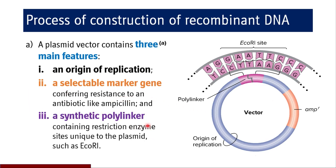Then there is a synthetic polylinker which contains restriction enzyme sites specific to a particular restriction enzyme. Here in this case we have taken ECO-R1. This synthetic polylinker sequence is unique and specific to the plasmid, and it has restriction enzyme sites specific for ECO-R1. These are the three main features of the plasmid vector which is going to be used in construction of recombinant DNA.